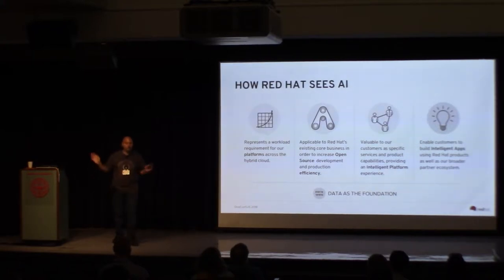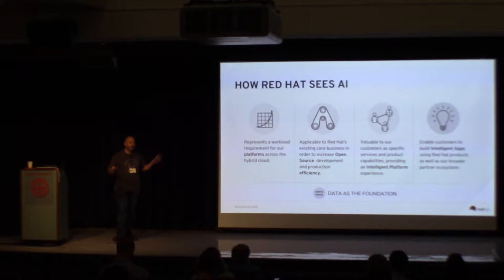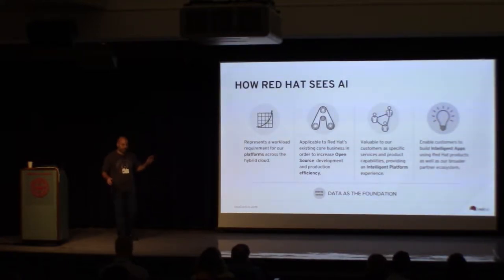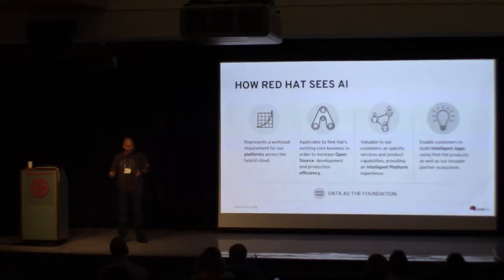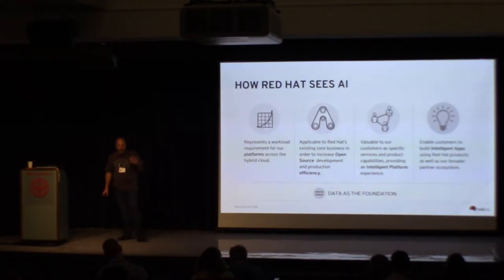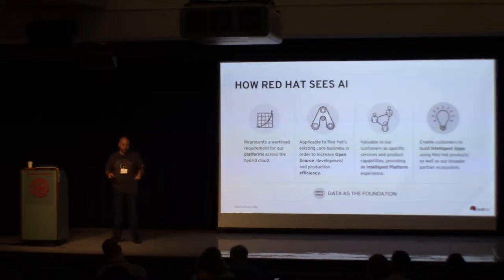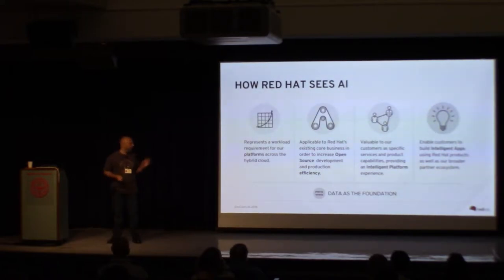So what does it mean from a Red Hat point of view? We at Red Hat see AI in five perspectives. First, it's a workload for a platform. We're an operating system and platform company to a large degree, and AI being such a big transformation — something every business has to deal with — we want to provide the best platform for that use case.